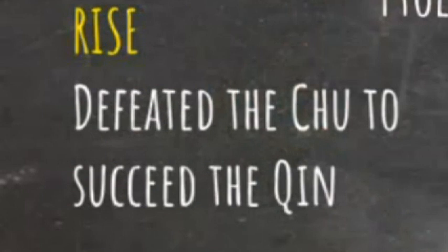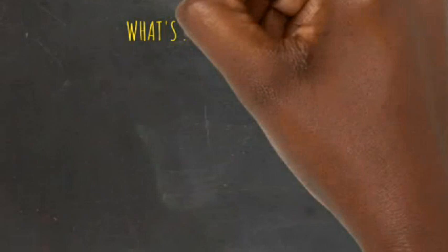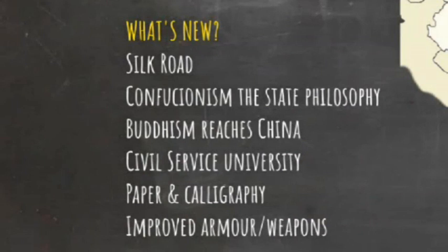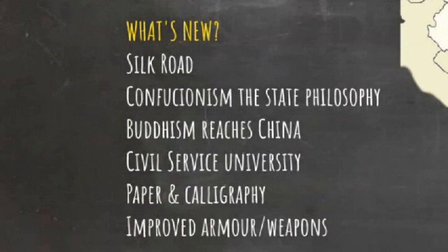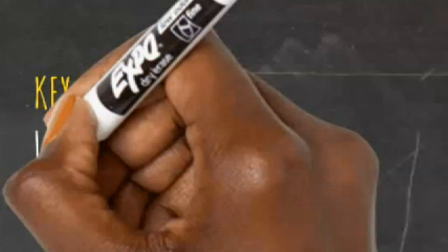Their westward expansion and trade led to the creation of the Silk Road. They installed Confucianism as the state philosophy, and contact with India led to Buddhism reaching China. A Roman embassy was even established in the capital Luoyang in 166, at the behest of Antoninus Pius. The state was professionalized with civil service appointments achieved on merit through a special university. Paper was invented and Chinese calligraphy developed as an art form. Liu Bang, born into a peasant family, was the founding emperor of the Han. It was also the era of Sima Qian, known as the Grand Historian, who produced the histories of the earlier dynasties.